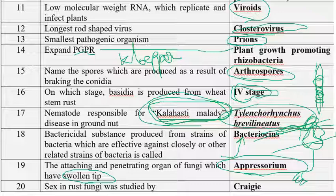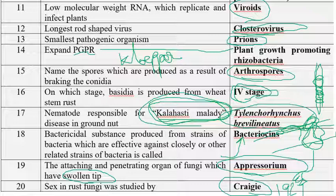The sexual stage of rust fungi was discovered by Craige in the year 1927. The sexual stage, spermatial stage, zero stage, and pycnial stage all have the same meaning — all discovered by Craige in 1927.